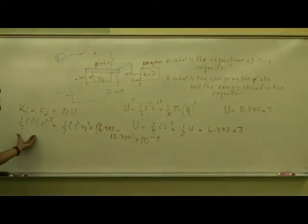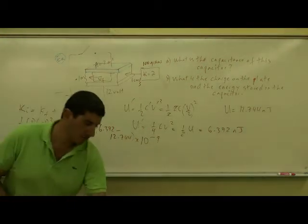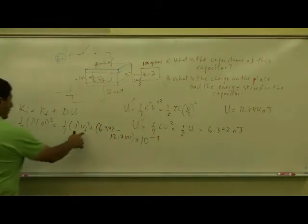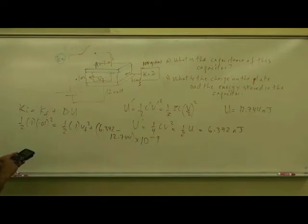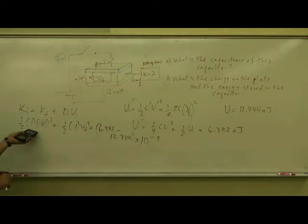So if you take this over to the other side and solve for V final, what does it come out? So let's try this. 0.5 times 0.1 times 0.01 squared. This is 5 times 10 to the minus 6.